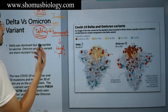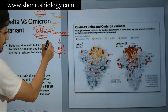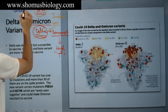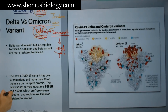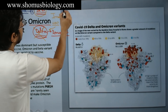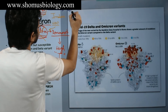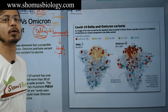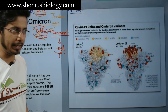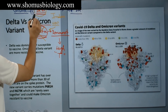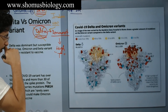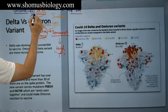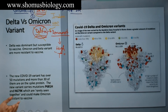The Beta variant, on the other hand, is not as transmissible as Delta, but it is dangerous because our vaccines may not be that much effective against it. One more concern is that the Beta variant causes repeated infections — meaning a person who already had COVID-19 can get infected again in the future with the Beta variant. This is because the Beta variant contains two mutations that make it resistant to vaccination.